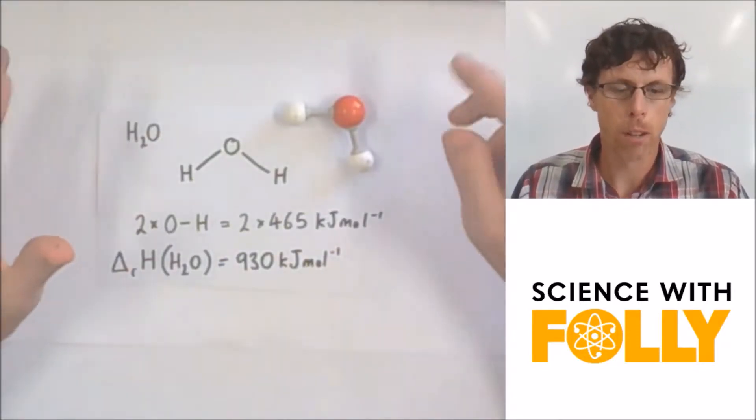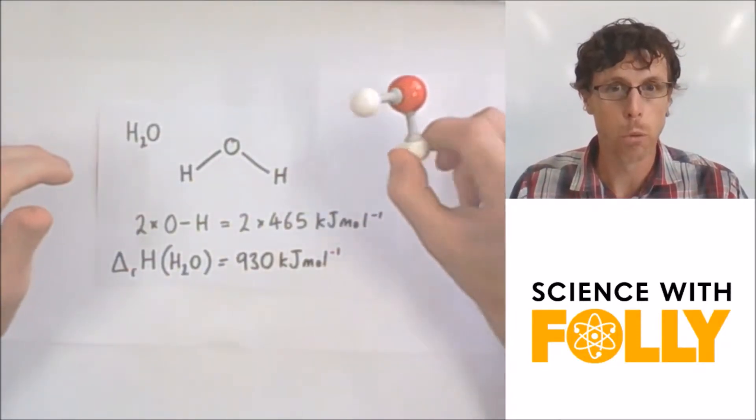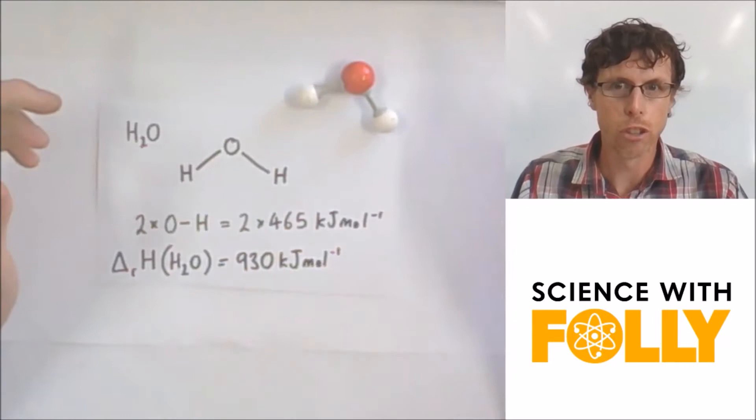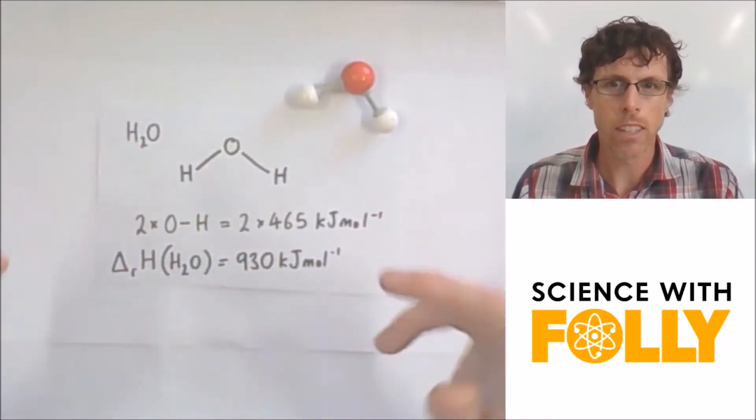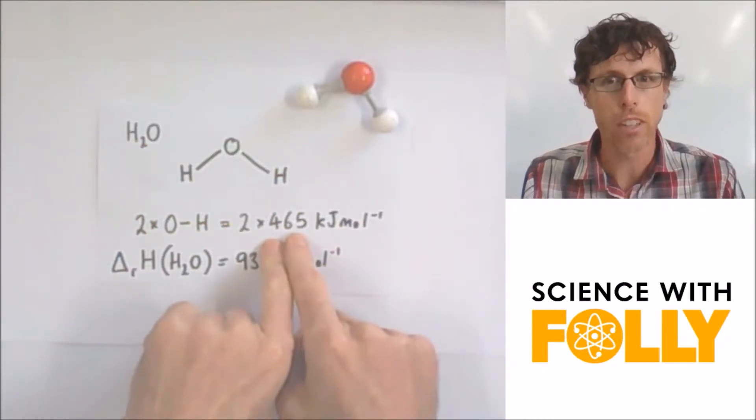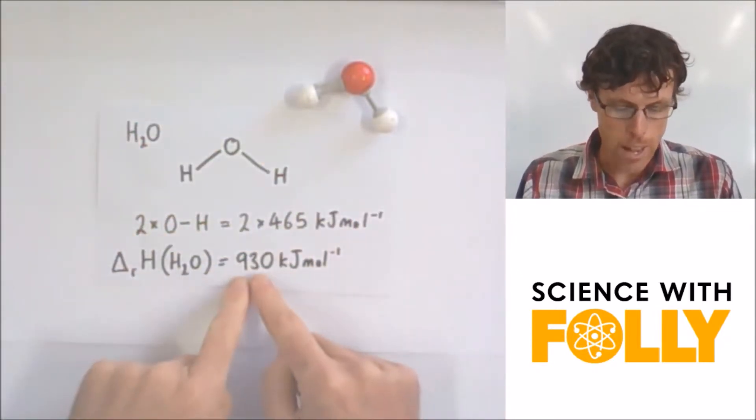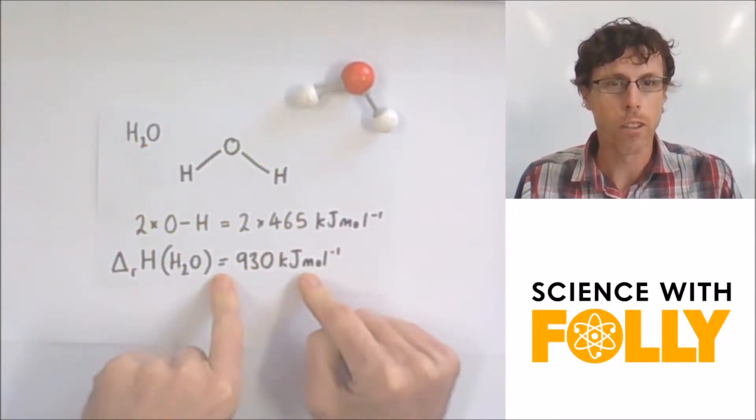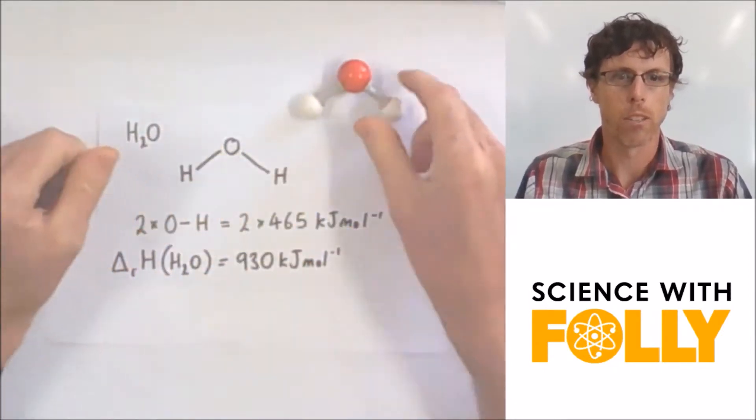And when I look at an entire molecule, such as H2O water, you can see there are two O to H bonds. Each O to H bond has a bond enthalpy value of 465, so I times them by two, and that gives me 930 kilojoules per mole for the whole molecule.